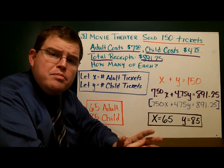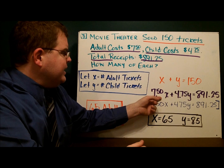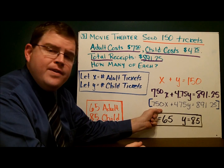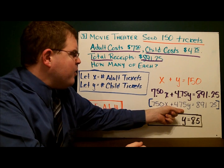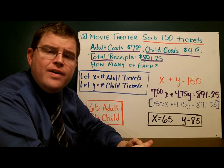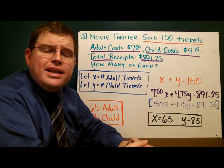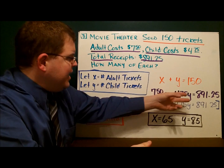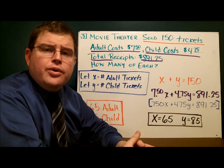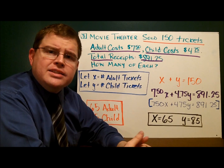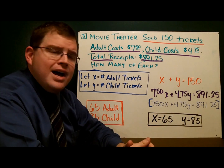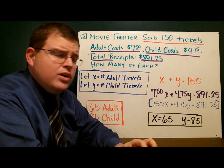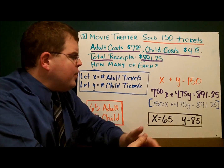If you dislike the decimal points, you can multiply the entire equation by 100 to get 750x plus 475y equals 89,125 — that makes it a little easier to work with. Some folks will leave the decimals in; others will multiply the whole equation by 100. Your choice. Now solve the system: x equals 65, y equals 85. We sold 65 adult tickets and 85 children's tickets.